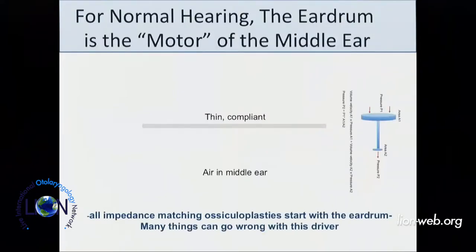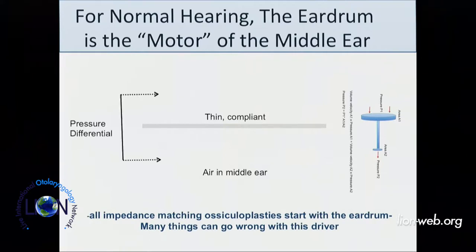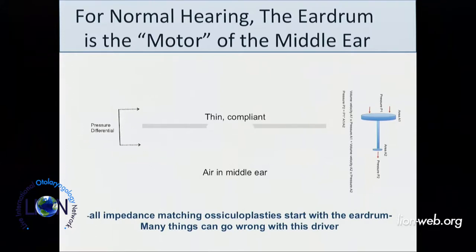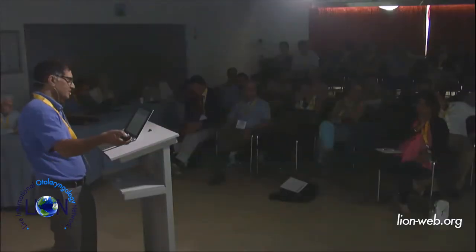For normal hearing, the eardrum is the motor of the middle ear — you can't really get impedance matching without an eardrum. If you want to get airborne hearing, you have to have a vibrating eardrum. To get an eardrum vibrating, you need a pressure differential. If you have a hole in it, you don't generate a pressure differential. So perforation means the eardrum doesn't vibrate.